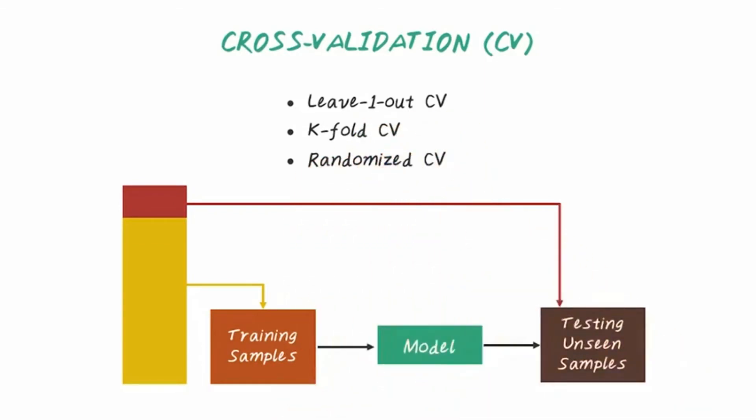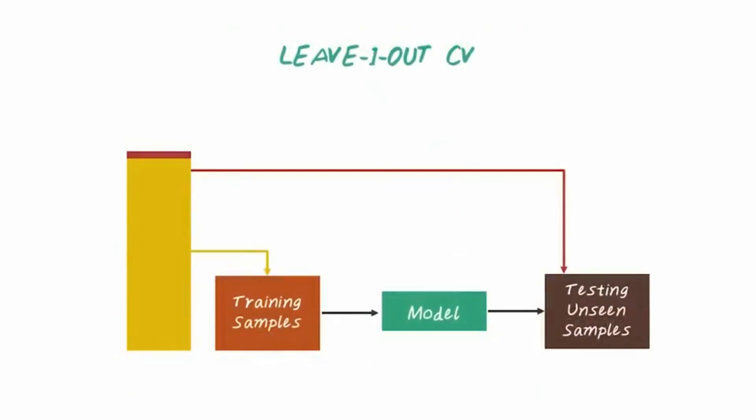In leave-one-out cross-validation, we take one example at a time as our validation set and use the remaining set as the training set. Then repeat this process many times, going through the entire data set. The final performance is computed by averaging the prediction performance across all iterations.